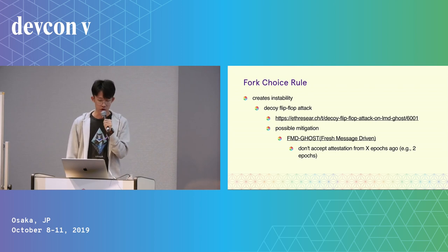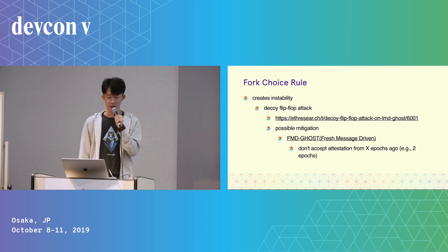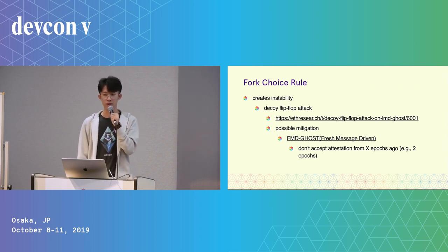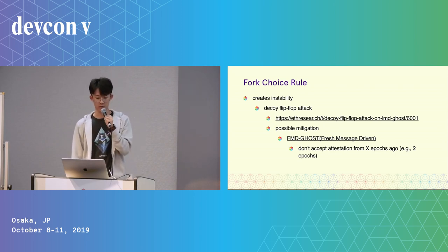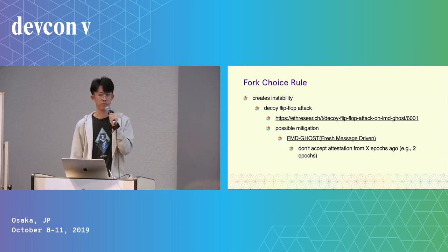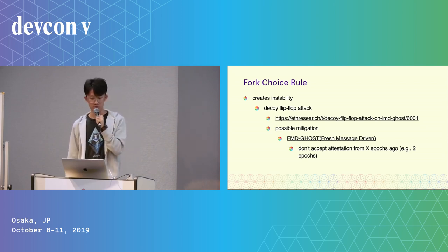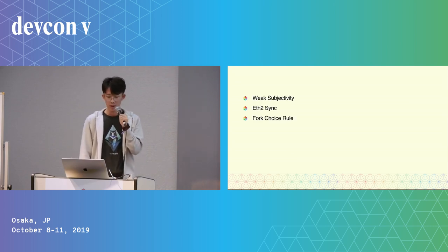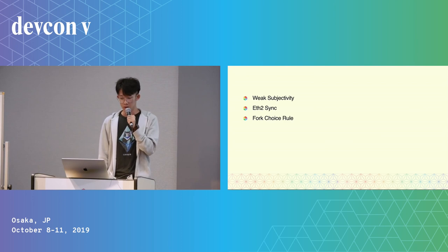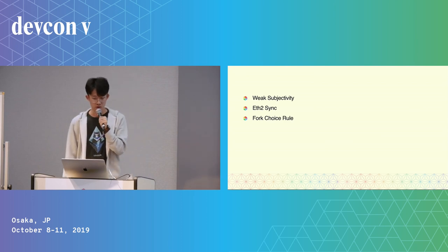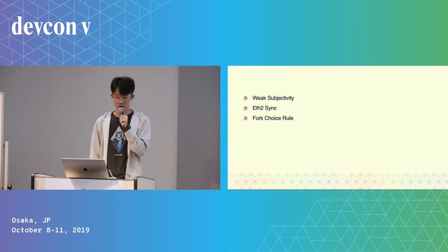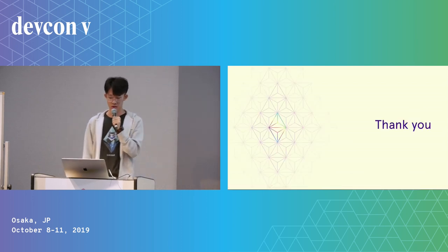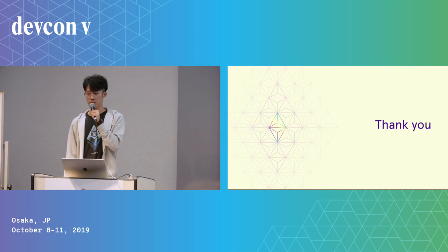One possible mitigation is the recently proposed variant of GHOST called Fresh Message-Driven GHOST. The idea is basically that we do not accept attestations from too long ago — for example, we do not accept attestations from maybe two weeks past. And that's my introduction on weak subjectivity, ETH2 sync, and the fork-choice rule today. Thank you.